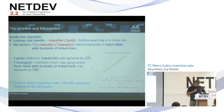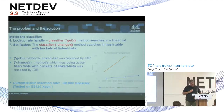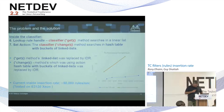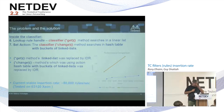The problem is that inside the classifier, the lookup for the rule handle — the classifier get method — is doing a linear search. When you do a linear search with one million entries it's O(1 million), so it takes a lot of time. Also the set actions was implemented with a hash, which is a good start, but the hash had only 16 buckets, so again it's kind of a linear search.